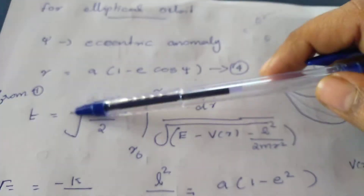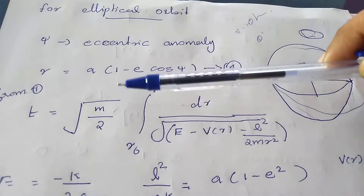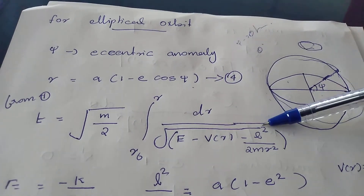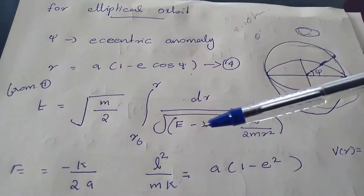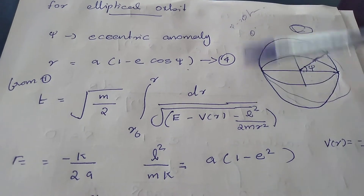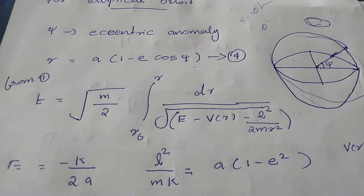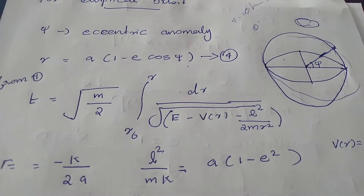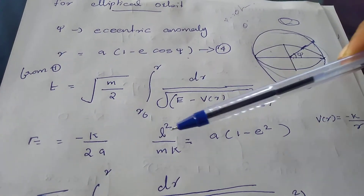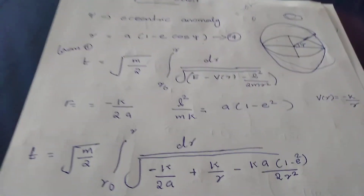For elliptical motion, equation 1 becomes t equals the integral of square root of m by 2 times dr divided by the square root of [E minus V of r minus L squared by 2mr squared]. We have to express this in terms of the semi-major axis a, eccentricity e, and constant k. Using the relations: E equals minus k by 2a, and L squared by mk equals a times (1 minus e squared), and V of r equals minus k by r. We now substitute into equation 1: the integral from r0 to r of dr divided by square root of [E minus k by 2a plus k by r minus L squared by mk times k into a(1 minus e squared) divided by 2r squared].